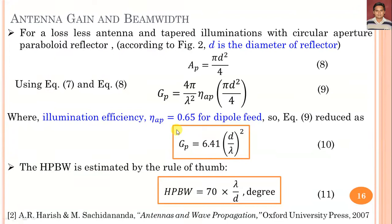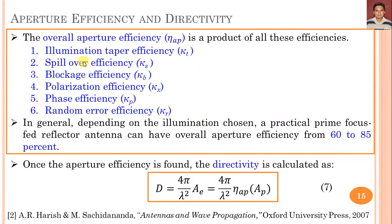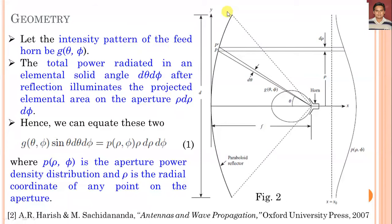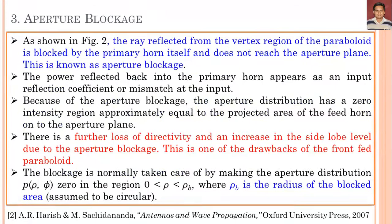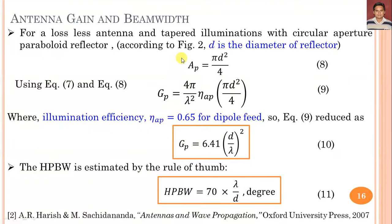To calculate the antenna gain, we consider a lossless antenna with tapered illumination and a circular aperture paraboloid reflector. The physical area is A_P = πD²/4, where D is the diameter of the reflector. Combining the directivity and aperture equations, power gain G_P = η·D, where η is the product of radiation efficiency and illumination efficiency. Assuming radiation efficiency of 100%, the power gain depends on η_AP and the overall physical area.